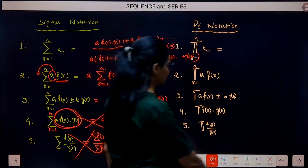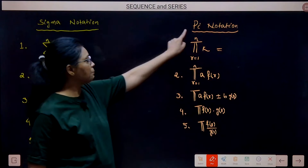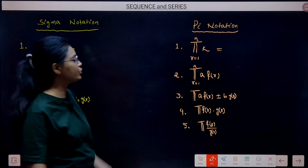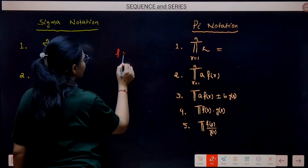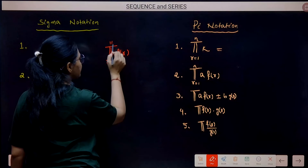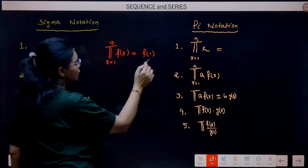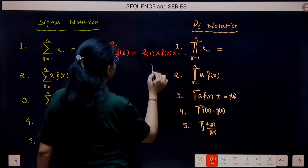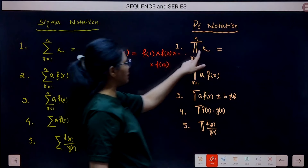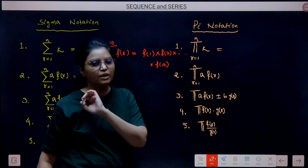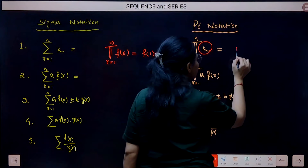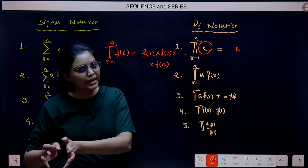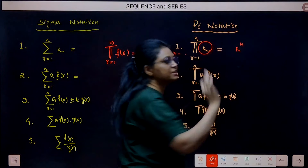The second notation is the product notation, denoted by pi (π). Sigma stands for summation; pi stands for product. Pi of F(r), r from 1 to 10, means: put r = 1, multiply by r = 2, multiply by r = 3, and so on up to r = 10 — multiplication throughout instead of addition. If K is a constant inside pi, r from 1 to n, then K is multiplied n times, giving K^n.